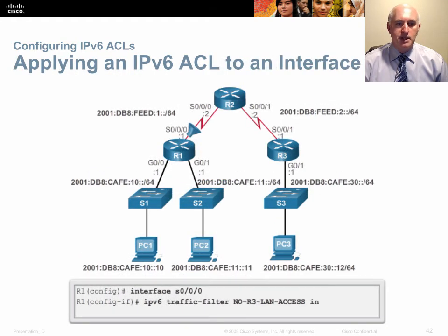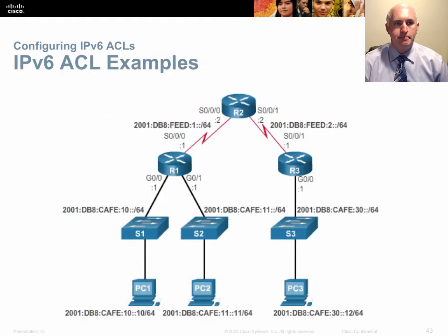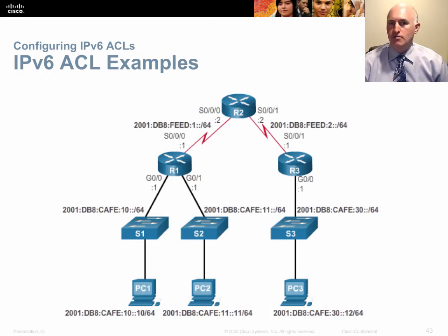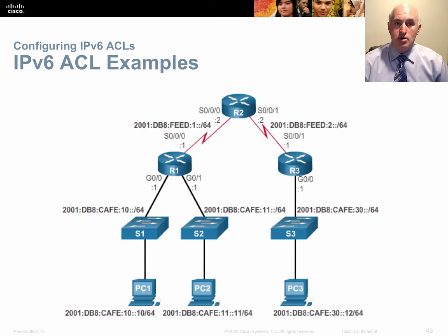To apply the list, instead of 'ip access-group' you type 'ipv6 traffic-filter', then the name of the list and the direction — in or out. Remember, on a router you can have both an IPv4 and an IPv6 access list on the same interface in the same direction, separately filtering IPv4 and IPv6 traffic, since an interface can have both an IPv4 and an IPv6 address.